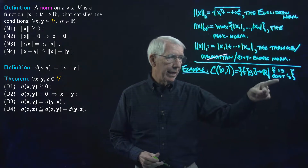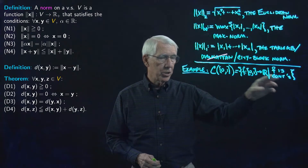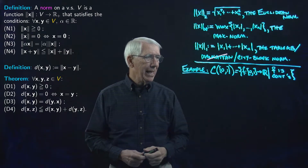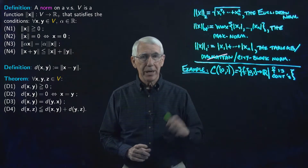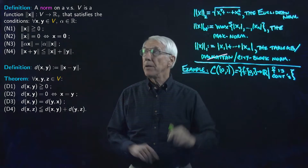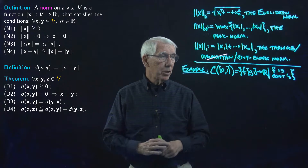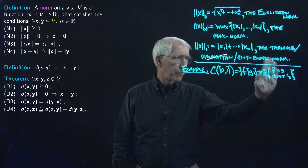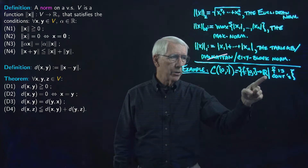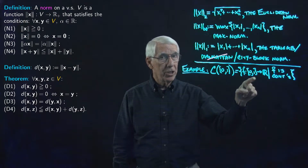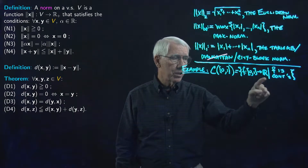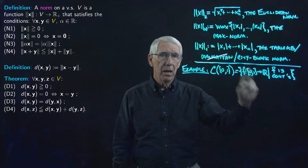We haven't yet done anything with continuous functions, but we're going to do that shortly, so this is a little bit of a preview. Before we talk about a norm on this set, it's going to have to be a vector space. The set of all real-valued functions on any set — we've already shown, we called it script F of X — is a vector space.